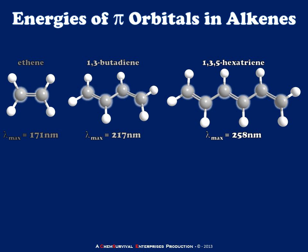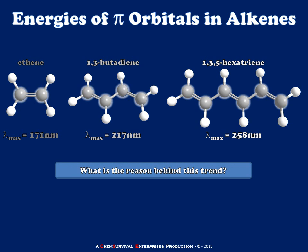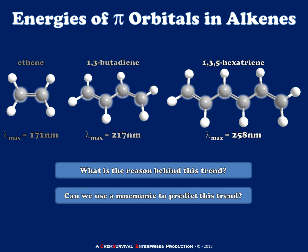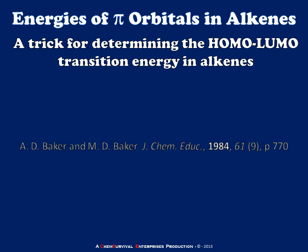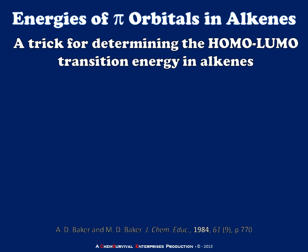Not only is this true, but there's a very simple way to predict exactly what those energy gaps will be. I'll show you a mnemonic to help you predict and calculate the energy differences. This trick for determining the HOMO-LUMO transition energy in a simple linear conjugated alkene is taken from the literature — a paper written in 1984 by Baker and Baker, published in the Journal of Chemical Education. It's actually less than a page, and I highly recommend you read it if you have access.